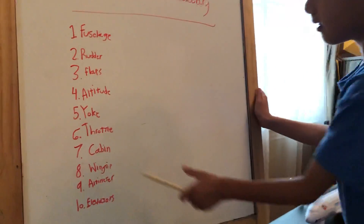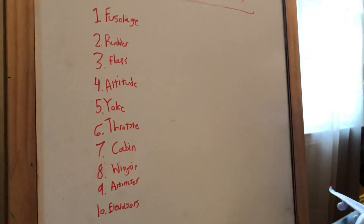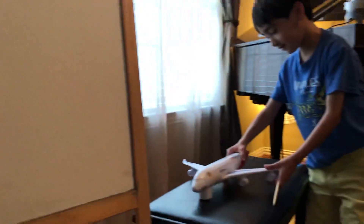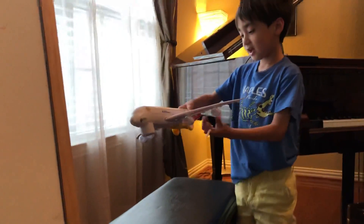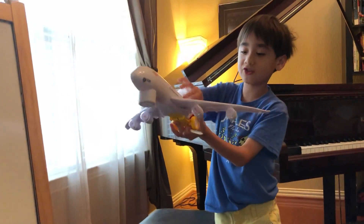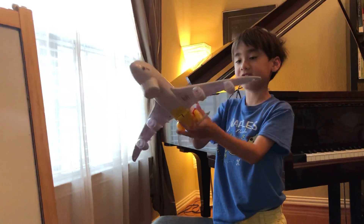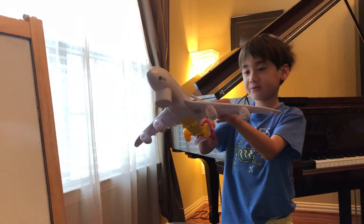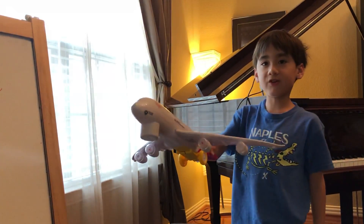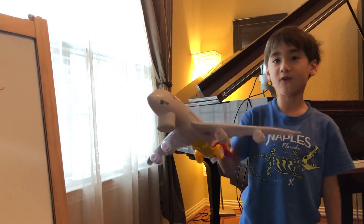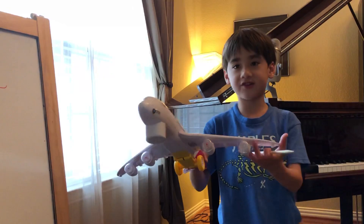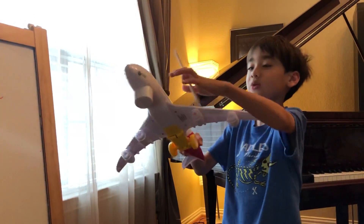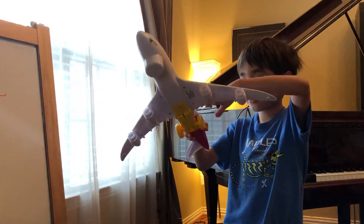The cabin is kind of like the fuselage — it's another word for fuselage, which is where the passengers sit. This is a big Airbus A380, so it has 843 seats in total, which is the maximum level of both decks.